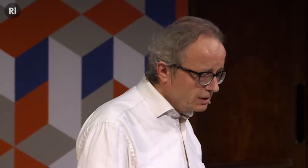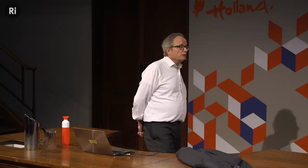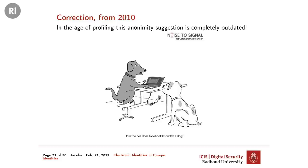I like to recall in that context this cartoon. Note the year — this is 1993. At that stage, people still thought they could be reasonably anonymous online. By now, this picture is completely wrong, so I have a correction from 2010: 'How does Facebook know I'm a dog?' Well, how does Facebook know? Profiling. This identity behind the computer behaved like a dog — probably went to dog food websites.